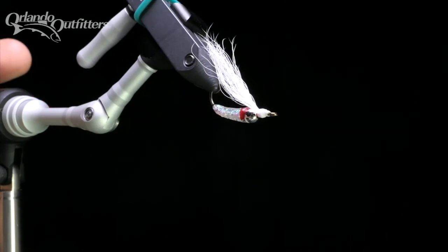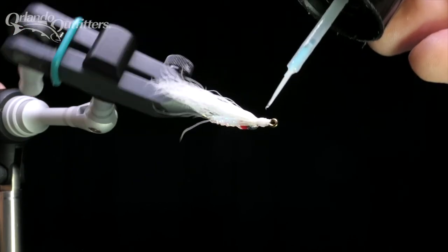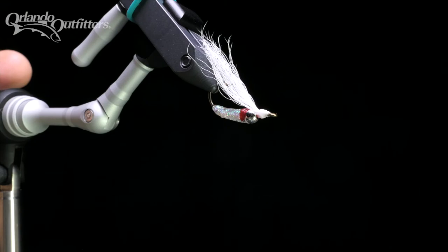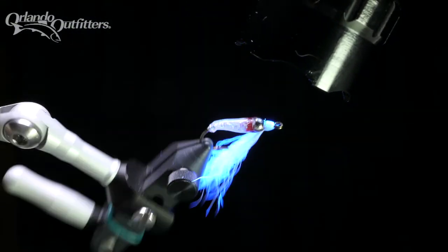The gamboozler can be tied in any color you want, with beads of different sizes and materials to change the sink rate. I sometimes tie it on a short shank saltwater hook as well. The resin body gives the fly a more minnow-like shape and increases its durability, but I tied it for years with a plain sparkle braid body and caught plenty of fish.